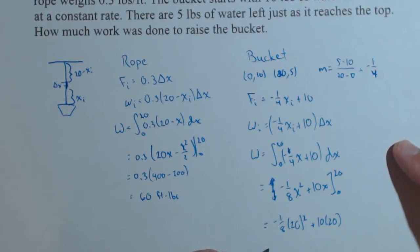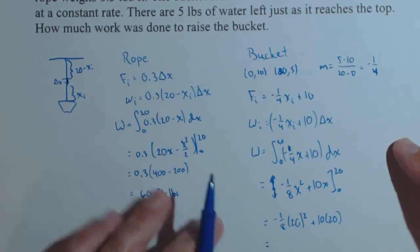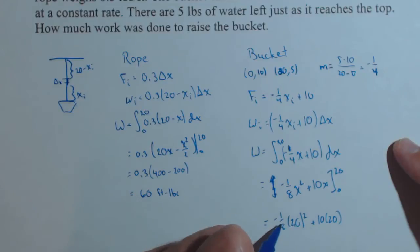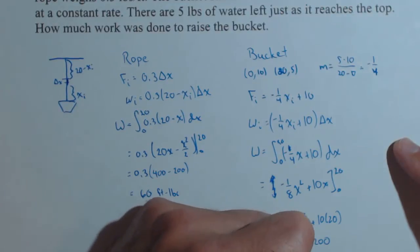And we will have, this is 400 divided by 8, so we have negative 50 plus 200 equals 150 foot-pounds.